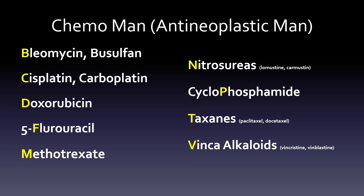Chemo man, or antineoplastic man, is meant to help you recognize the adverse effects that go along with certain medications. So B for bleomycin and busulfan, C for cisplatin and carboplatin, D for doxorubicin, F for 5-fluorouracil, M for methotrexate, N for the nitrosureas like lomustine and carmustine, cyclophosphamide — we're actually using the P in the middle of the word because we've already used a C — the taxanes, T, paclitaxel, docetaxel, and then the vinca alkaloids, vincristine, vinblastine.